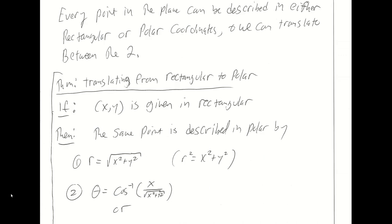Every point in the plane can be described either in rectangular or in polar coordinates. That is the core requirement that must be satisfied to be dealing with a new coordinate system — all points in the space must be describable in your new coordinate system. We can describe every point in the plane using polar, just as we could describe every point in the plane using rectangular. You can also translate between the two coordinate systems.